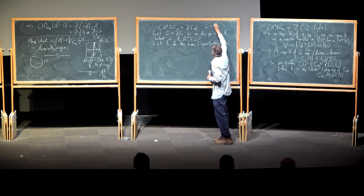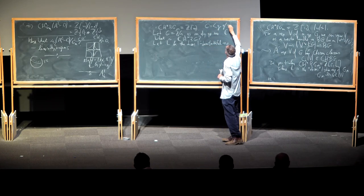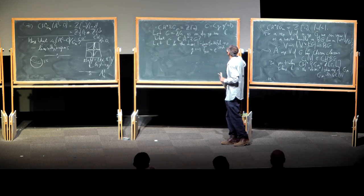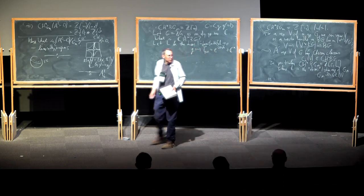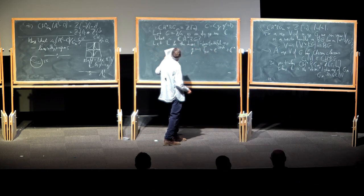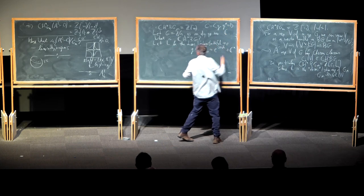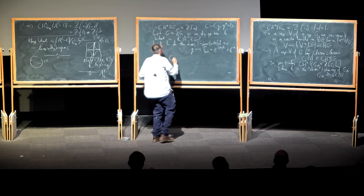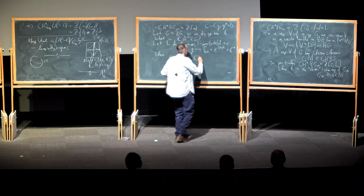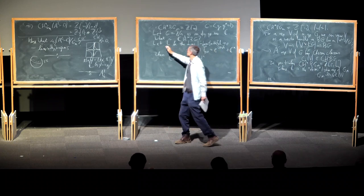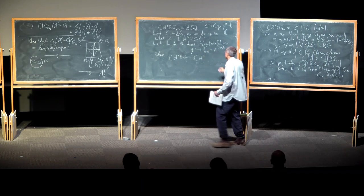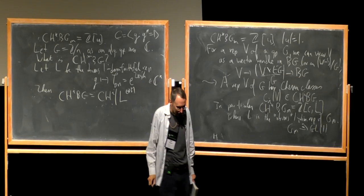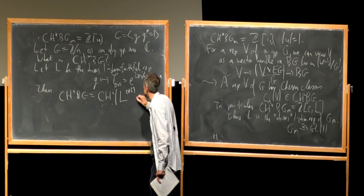This group has a generator g whose p-th power is 1, and the representation takes g to an N-th root of unity, say e^{2πi/N} in C*. So if I take the direct sum of m copies of this one-dimensional representation, then G acts freely outside the origin. As long as I take m greater than i, that's the definition of the equivariant Chow ring. So the generator of the cyclic group acts on (x_1, ..., x_m) by (ζx_1, ..., ζx_m), and that action is obviously free outside the origin.